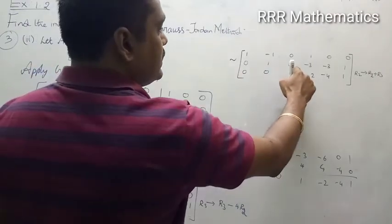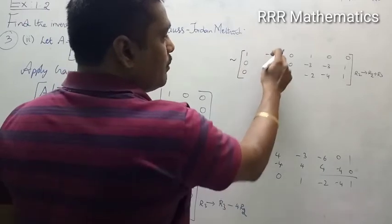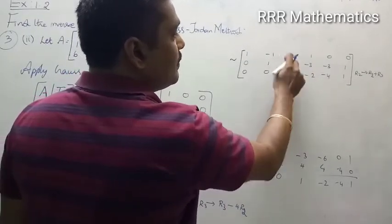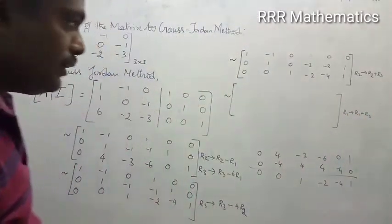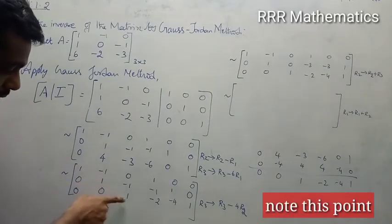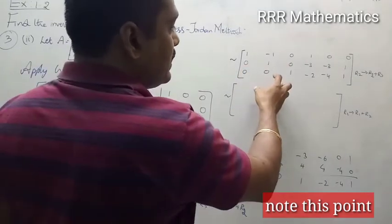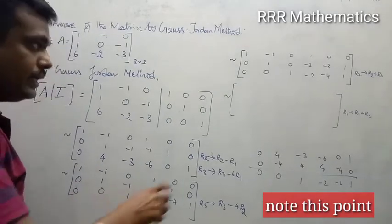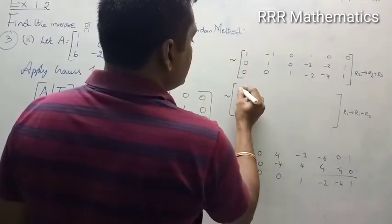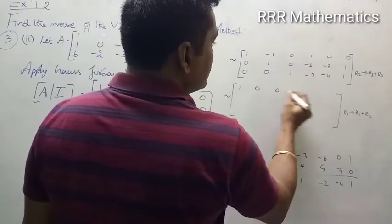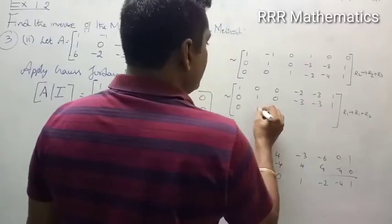Now I got 1, 0, 0; 0, 1, 0; 0, 0, 1 forming. I need only 0 here — it will be very easy. When you add these two rows: 1 plus 0 = 1; -1 plus 1 = 0. So I will replace R1 as R1 plus R2. When you go in this order — 1, 0, 0 and 0, 1, 0, 0 here — it will be very easy to find the inverse. So R1 becomes: 1 + 0 = 1; -1 + 1 = 0; 0 + 0 = 0. For the identity part: 1 + (-3) = -2; 0 + (-3) = -3; 0 + 1 = 1. Leave the second and third rows as they are.